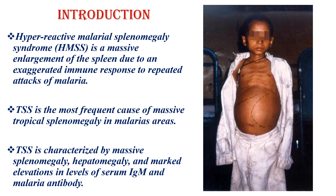Hyperactive Malarial Splenomegaly Syndrome is slightly more common in males and is more common in adolescents. It is characterized by massive splenomegaly, hepatomegaly, and marked elevation in levels of serum IgM and malaria antibody.